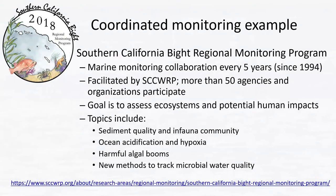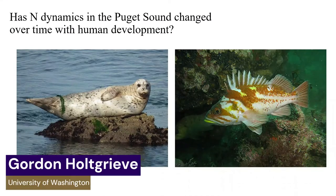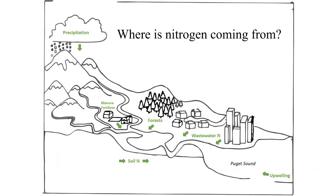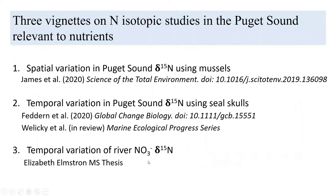The California Regional Bight monitoring program runs every five years and is a collaboration between over 50 agencies. There are questions that could be informed by employing tools like stable isotopes — in particular, stable isotopes of nitrogen. We might want to know where nitrogen coming into the sound is coming from. I'm going to present three quick vignettes on isotopic studies done in Puget Sound relevant to nutrients, focusing on the tool and its application rather than specific results.